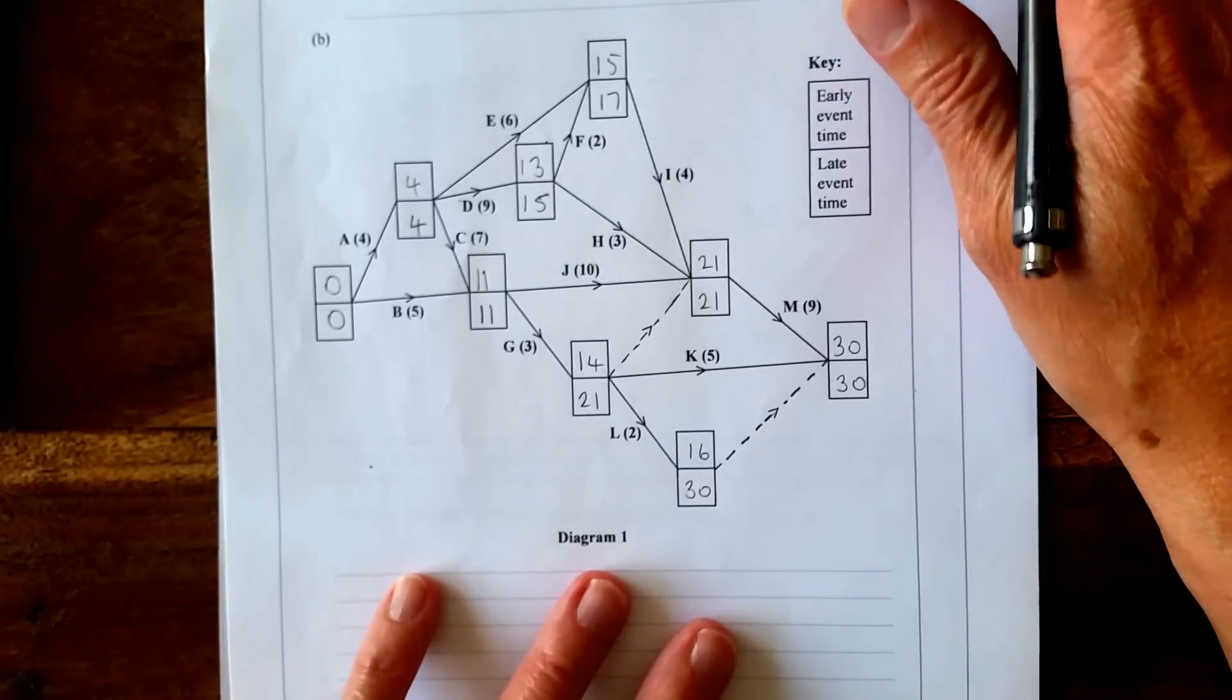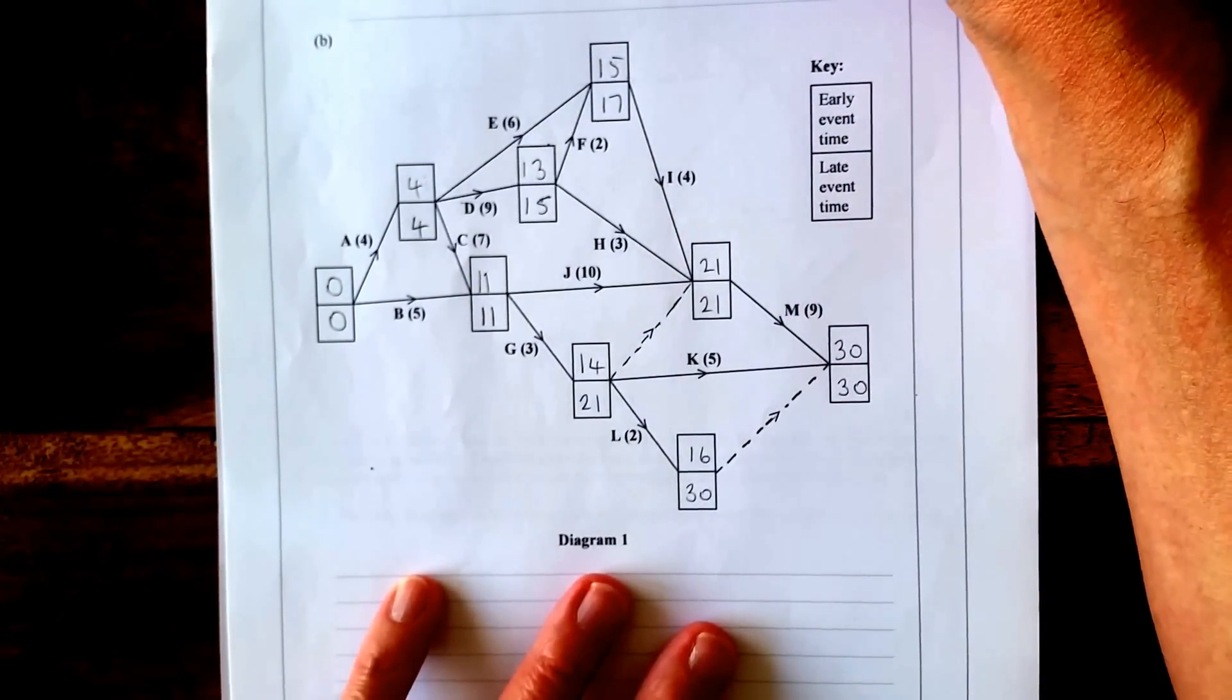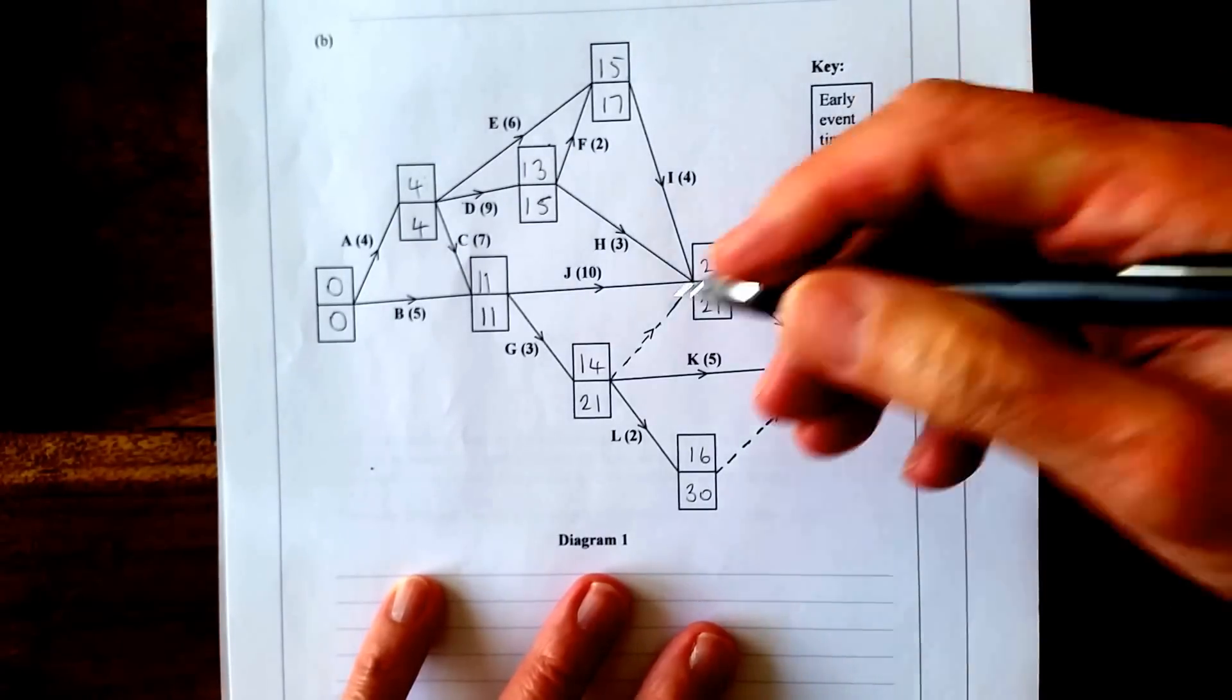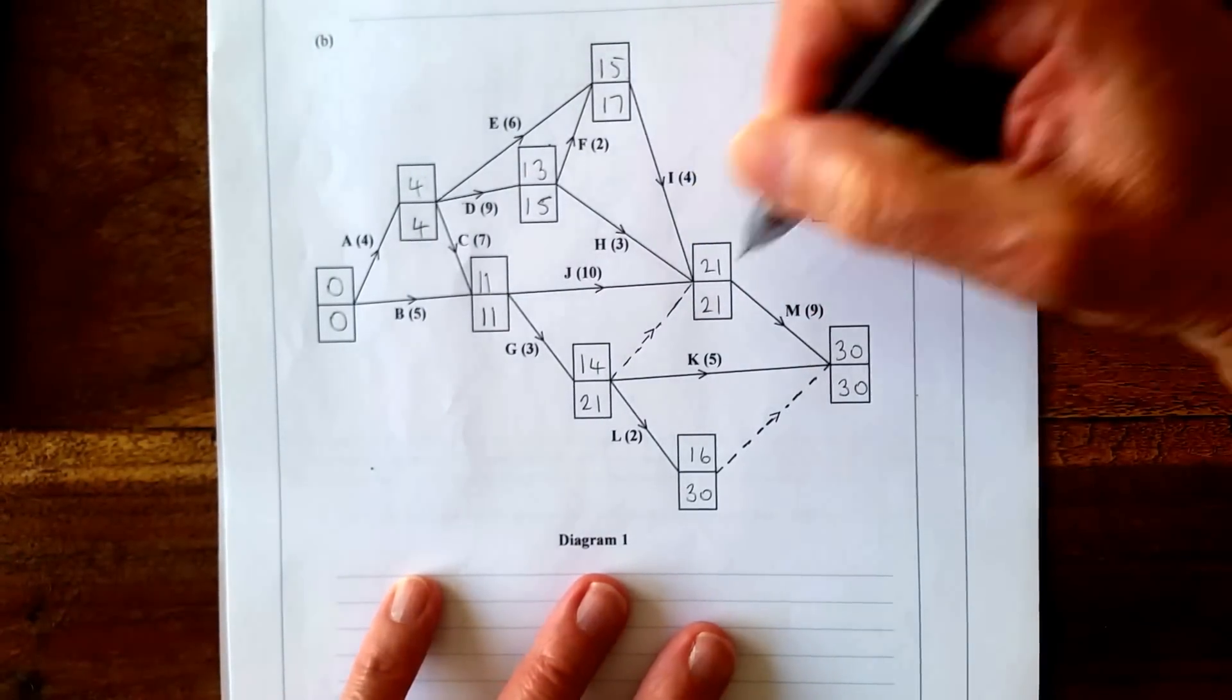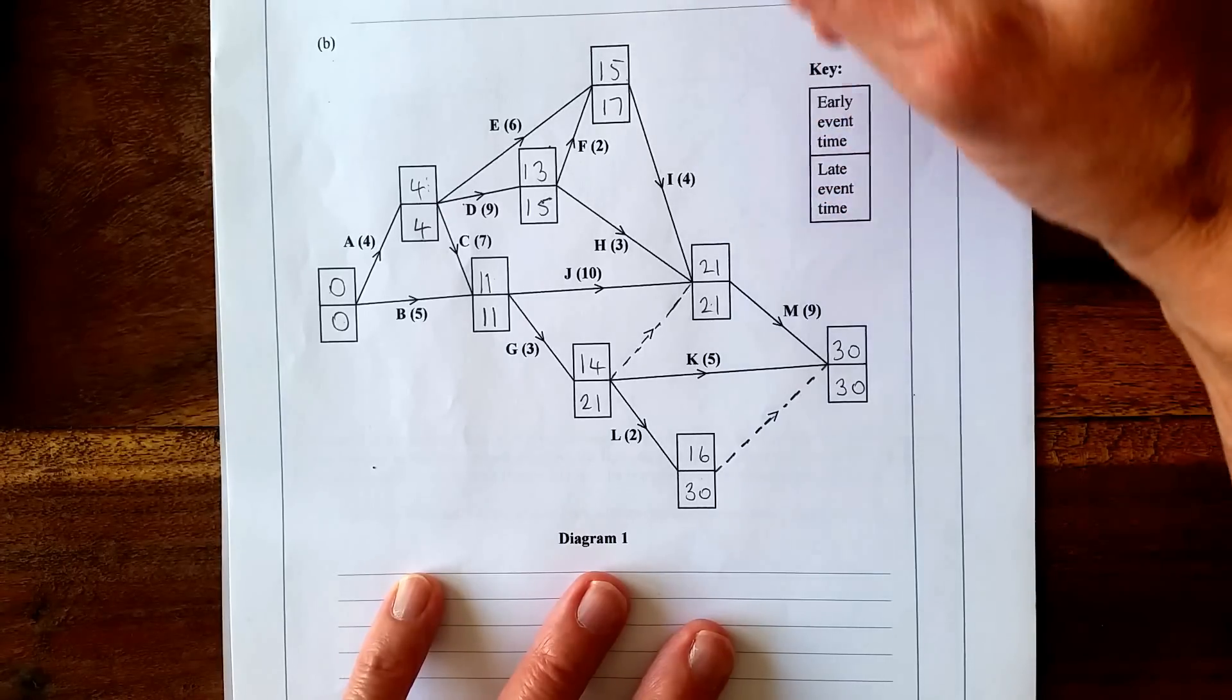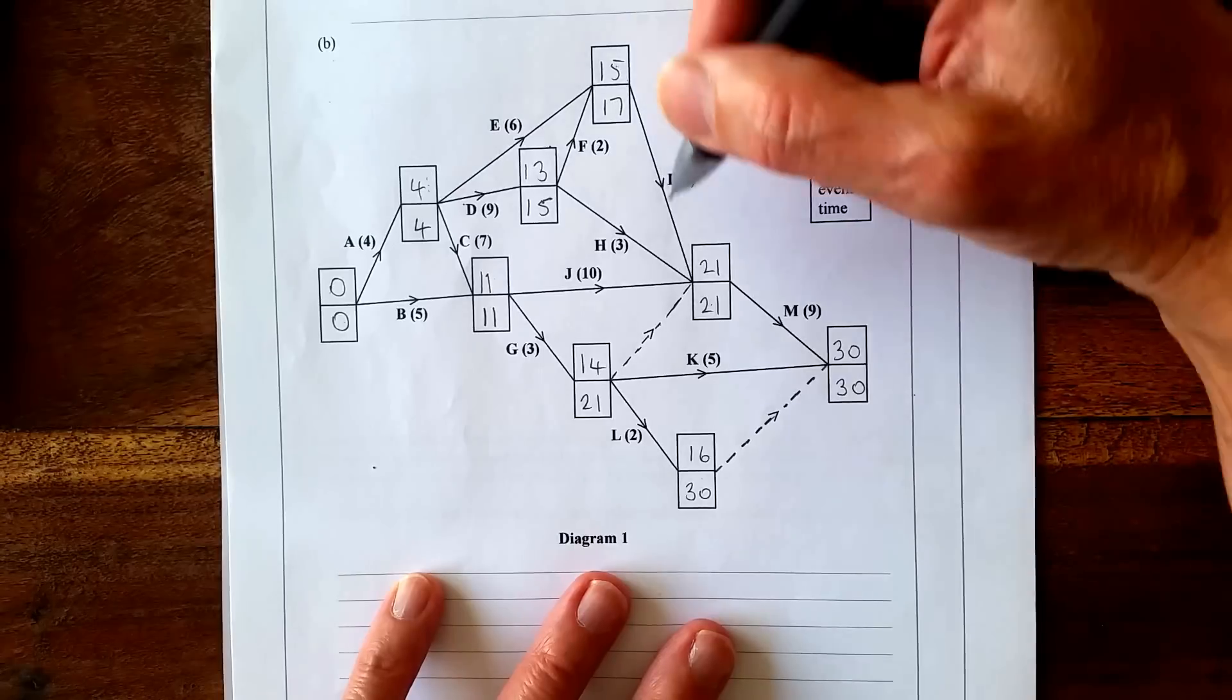OK, that's our part done. Now let's go back to the first part. It says in the context of critical path analysis, define the term total float. So if we look at something like this one, we've got 21, which is the late event time, subtract 4, which gives 17, and then we subtract 15, which is the early start.